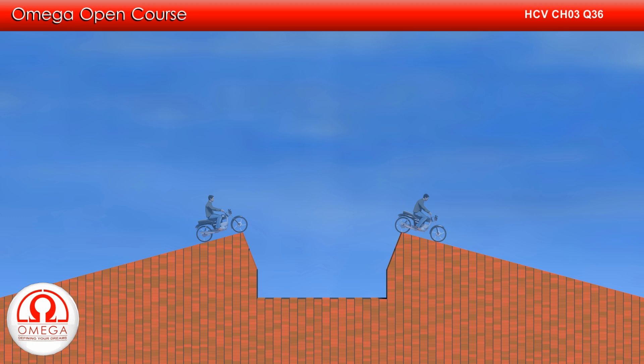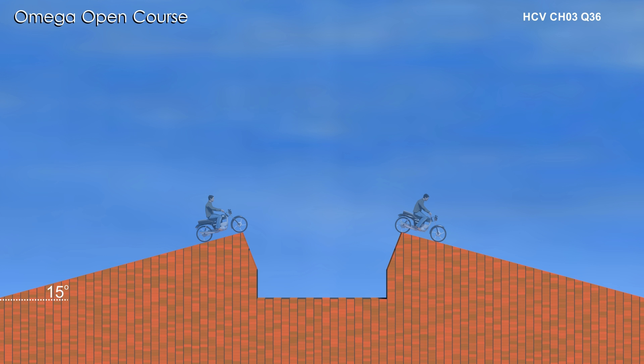For the bike to land safely on the road, the rear wheel of the bike must land on the road. As you can see, in that case, the range of the projectile is not equal to the width of the ditch but greater than it.